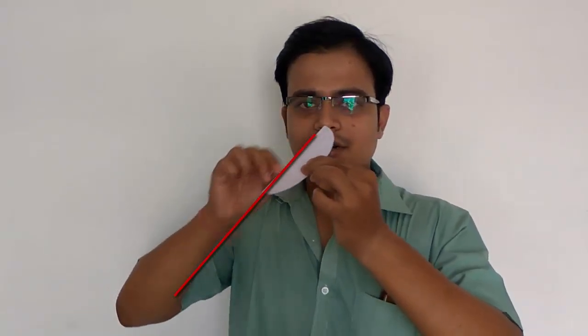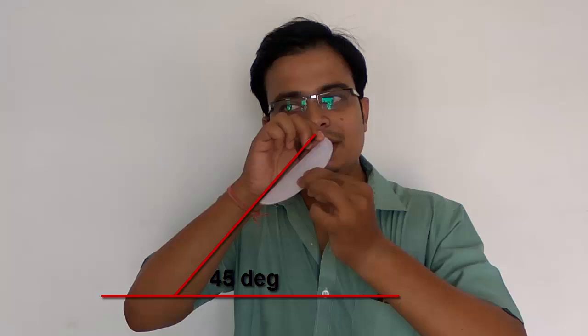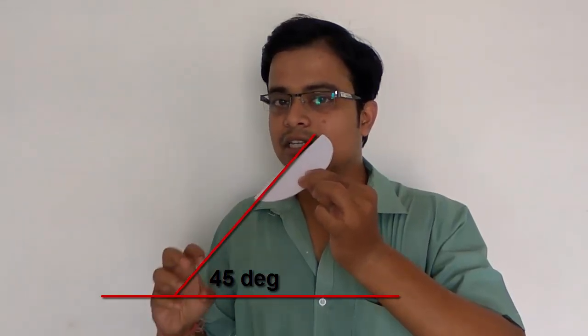In step two, we incline the surface as usual — the surface is inclined to the VP at 30 degrees. In step three, this straight edge makes an angle of 45 degrees with the horizontal plane. So: step one — surface resting on the vertical plane; step two — surface makes 30 degrees with the VP; step three — the edge makes 45 degrees with the HP.